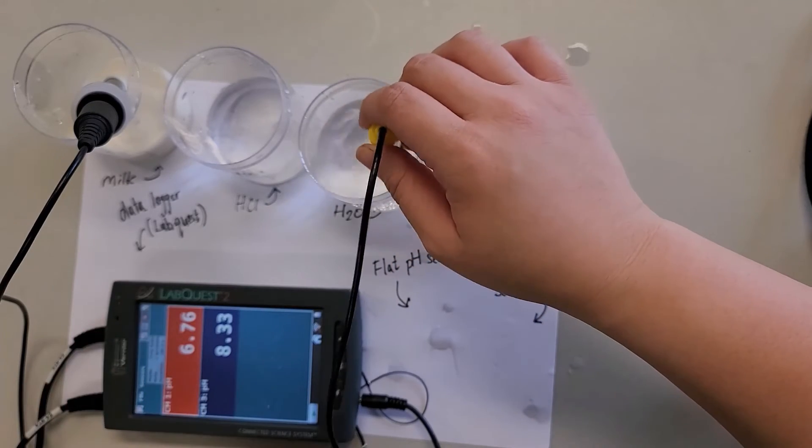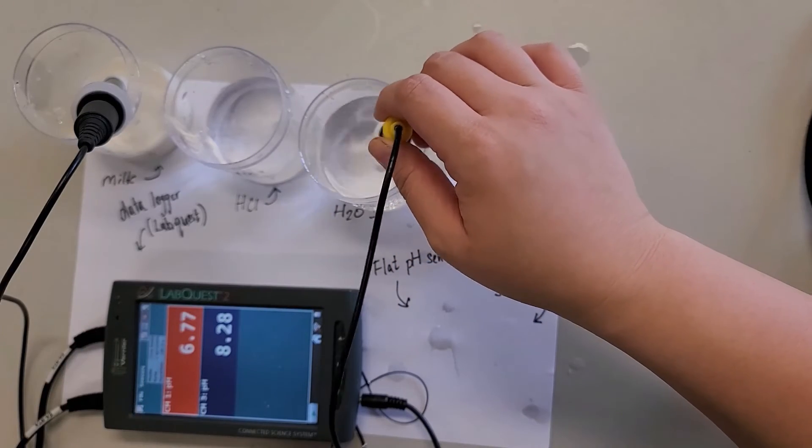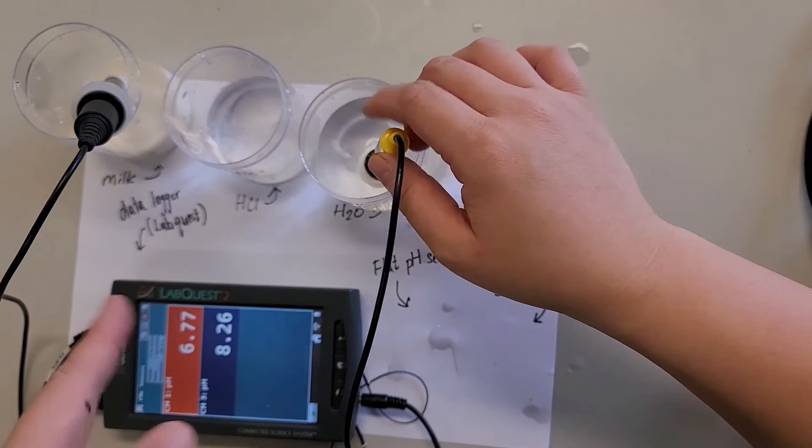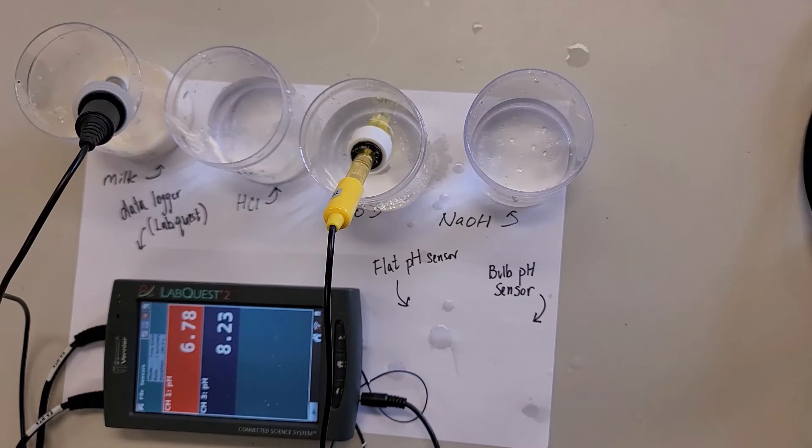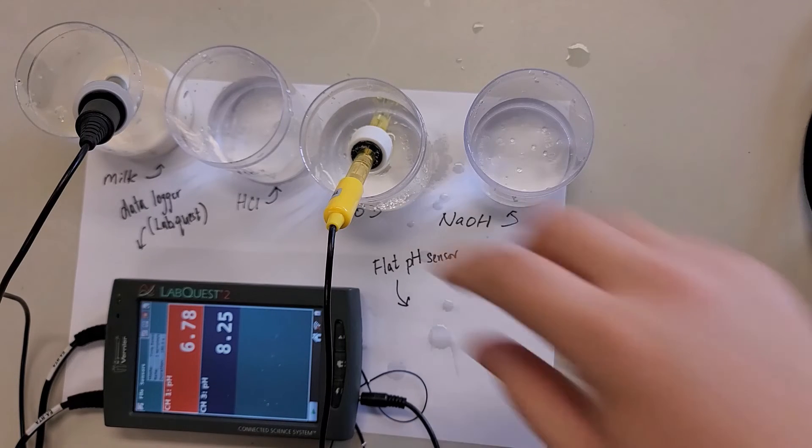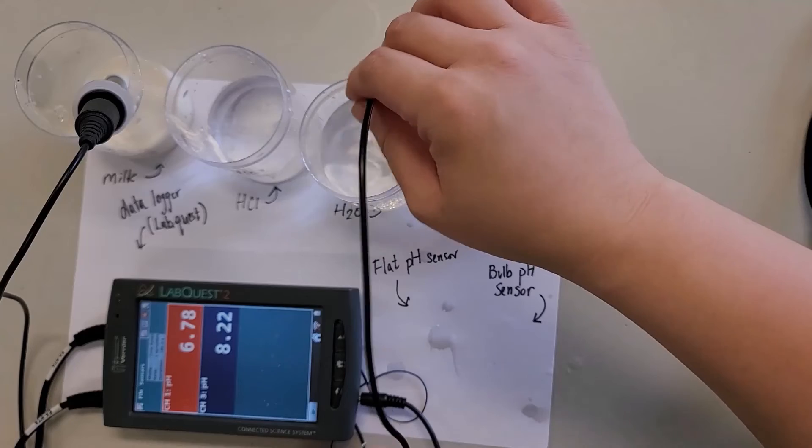Actually, the milk is a bit stable now, so it's 6.7 something. It's okay, because actually it's oat milk already. It might have turned sour already. So yeah, so this one is like, it's dropping. Still dropping. So there's the pH of water.